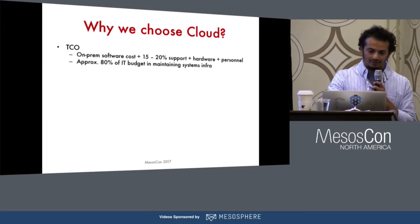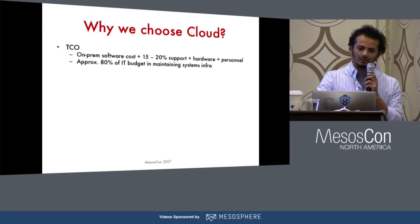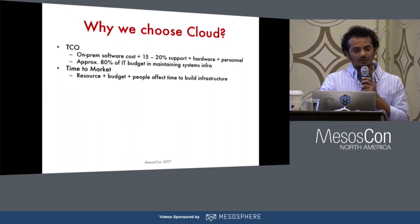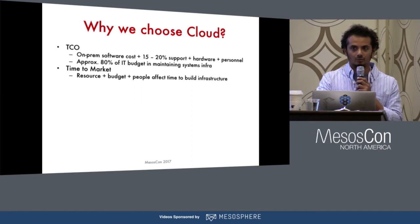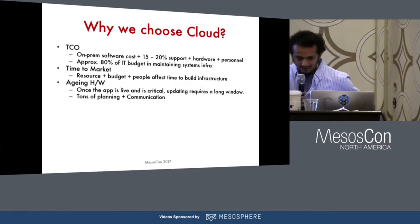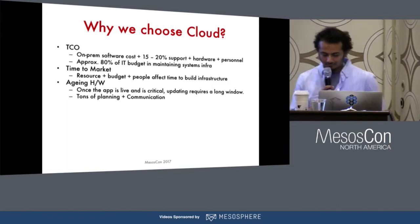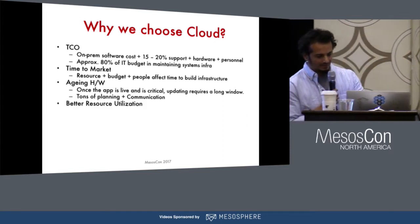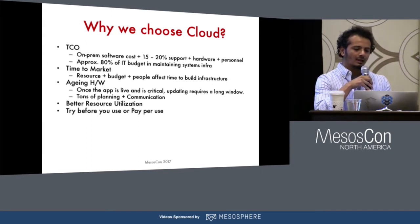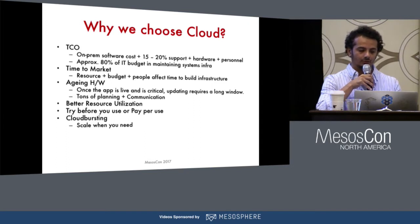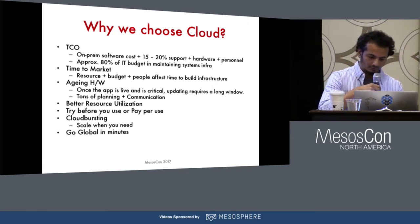You might have heard about this from all the vendors — AWS and Google Cloud. The TCO, total cost of ownership, is very low. Time to market your apps to run in the cloud is extremely fast — you can write your apps, you already have the resources, and it's out there. You have aging hardware in your on-premise data center, and doing any maintenance takes a long time, which is not the case with the cloud. You can have better resource utilization, try before you use it, do on-demand cloud bursting for more computation on the fly, and you can go global in minutes.